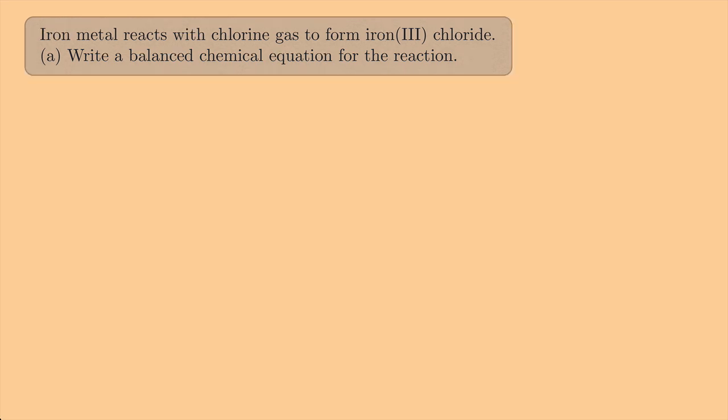For the first part, we're going to write a balanced chemical equation for the reaction. We'll start by listing what we have here and leave spaces to fill in the missing parts. First we have iron metal, so iron, that's Fe, and it's a metal so I can write an S for solid.